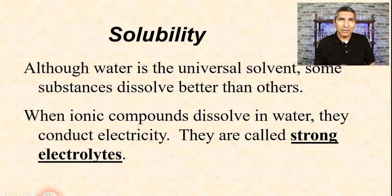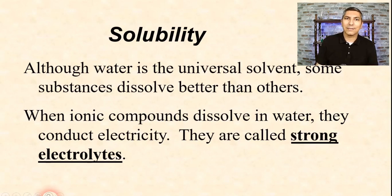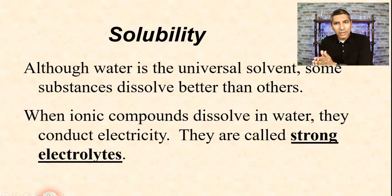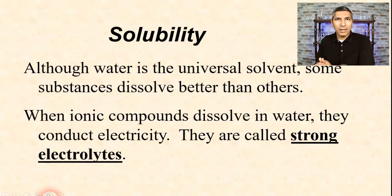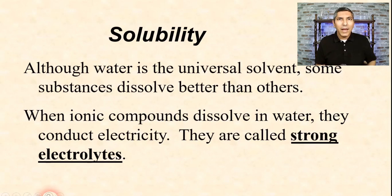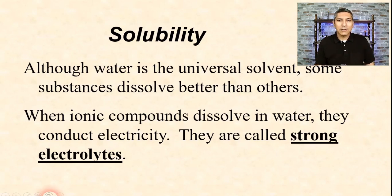The neat thing about ionic compounds is that when they dissolve in water, they conduct electricity. Because of this, ionic compounds are called strong electrolytes. When these ionic compounds dissolve, they actually break apart into their ions. For example, sodium chloride — salt — when dissolved in water is actually a mixture of sodium ions and chloride ions swimming around in solution. The presence of those charged particles allows the solution to conduct electricity very strongly.